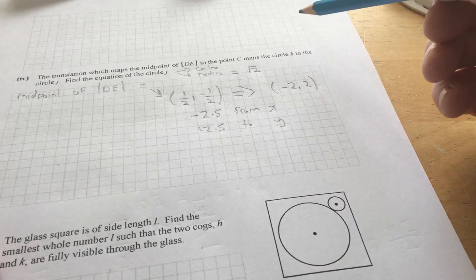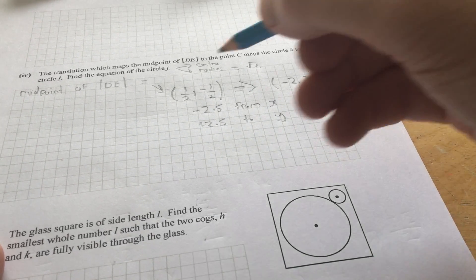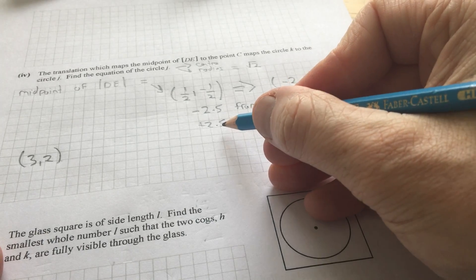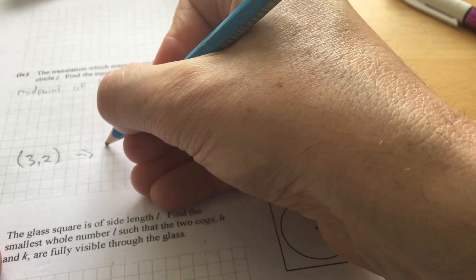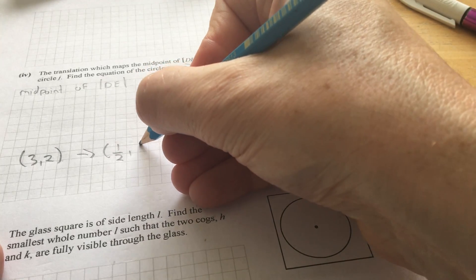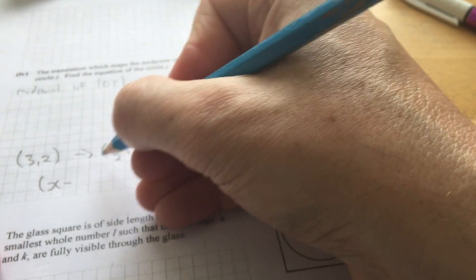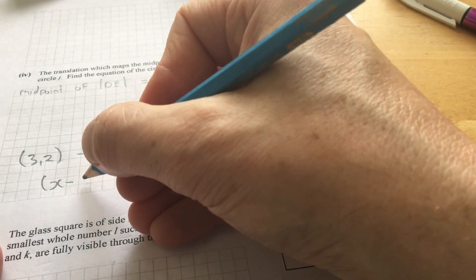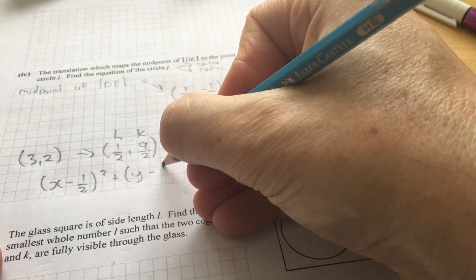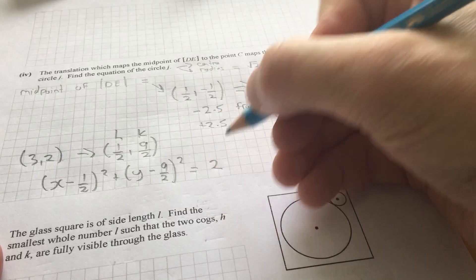Now, so, that's the translation. So, what's the center of the circle K? So, the center of the circle K is 3, 2. Again, that's from an earlier part. So, you subtract 2.5 from the X coordinate. So, that'll give you 1.5. And you add 2.5 to the Y coordinate. That'll give you 4.5, which is 9 over 2, whatever. So, therefore, the center of the circle is X minus... So, call that H and call that K. You know the center of the circle. So, X minus H squared plus Y minus K squared equals the radius squared. So, root 2 squared, which is 2.